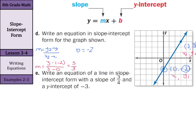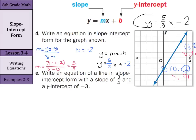Once I have my slope and my y-intercept, I can write this in slope-intercept form. y equals mx plus b, so y equals 5 thirds x plus negative 2. I can write that as y equals 5 thirds x minus 2. And that is the equation of that line.